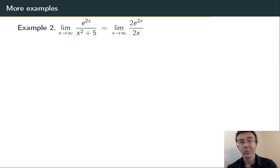Keep the limit the same. Differentiate the top using the chain rule to get 2e to the 2x. Differentiate the bottom, and it's just 2x. Now, when I try taking that limit as x goes to infinity, I get an infinity on the top and an infinity on the bottom again. It's still an infinity over infinity indeterminate form.